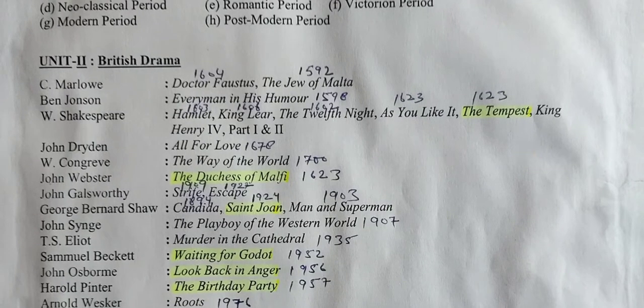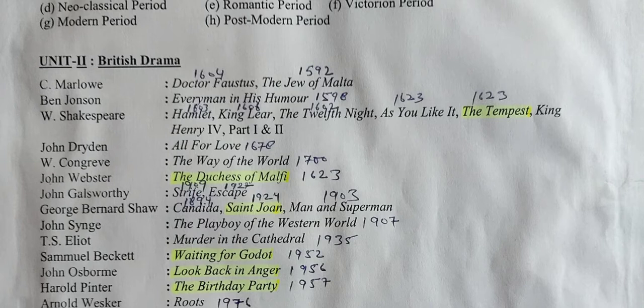Second unit: British Drama. Christopher Marlowe — Doctor Faustus, The Jew of Malta. Ben Jonson — Every Man in His Humour. William Shakespeare — Hamlet, King Lear, Twelfth Night, As You Like It, The Tempest, King Henry IV Part One and Part Two. The publication years are also written here.